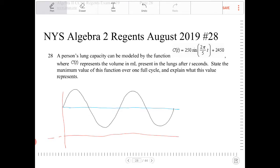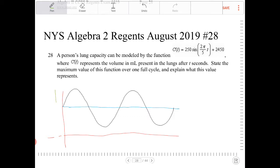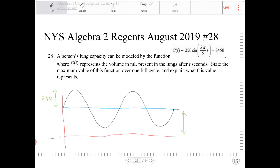And the amplitude is 250. So, that means from the midline to the top, that's going to be 250. And the distance from the midline to the x-axis, that's going to be 2450.